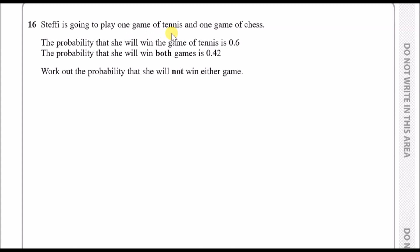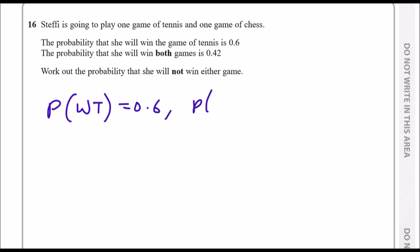Steffi is going to play one game of tennis and one game of chess. The probability that she will win the game of tennis is 0.6. So the probability that she does not win tennis — it's better to say 'not win' because maybe drawing is involved — is going to be 0.4, because all probabilities must sum up to 1.